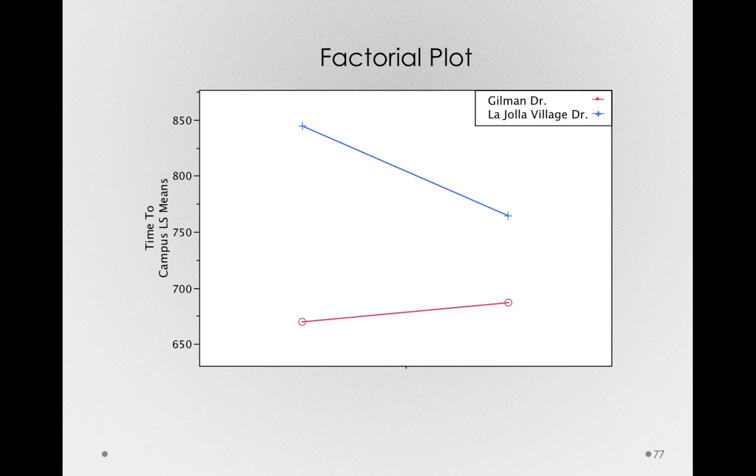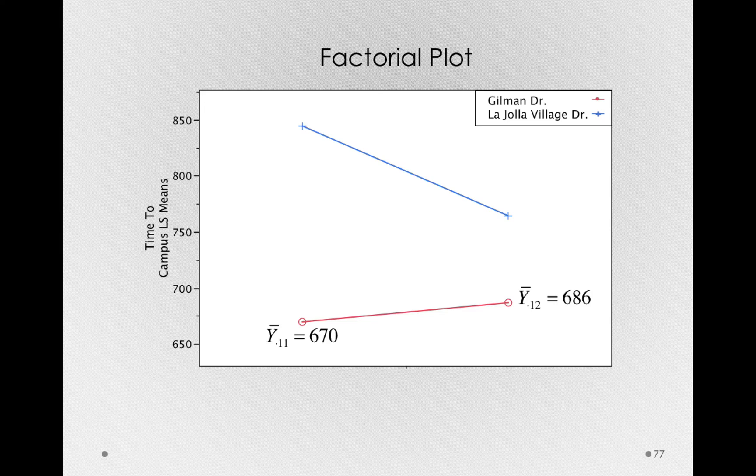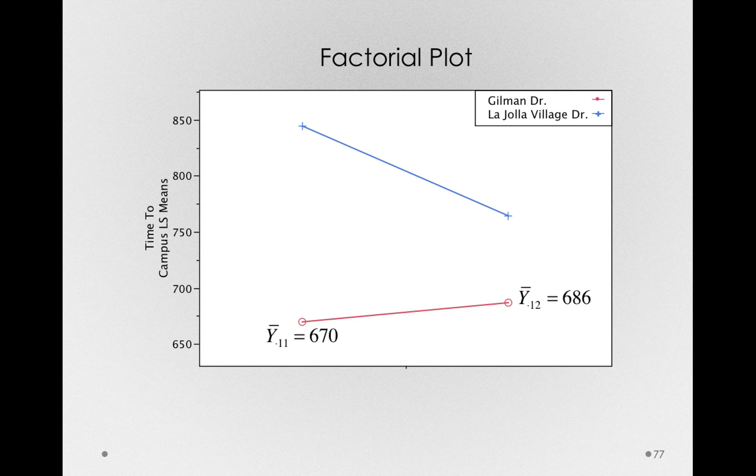Let's go forward to the factorial plot, and I'll label each of the different points. First, for Gilman Drive, we have at 8 a.m., y bar dot one one is equal to 670 seconds. At 9:30 a.m., y bar dot one two, 686.